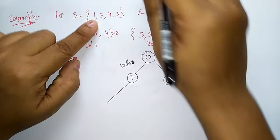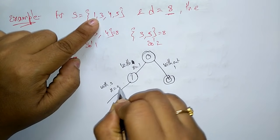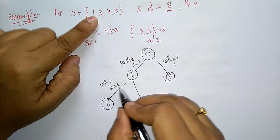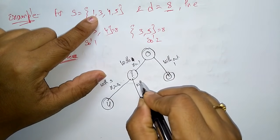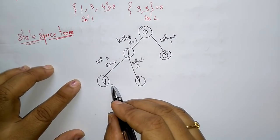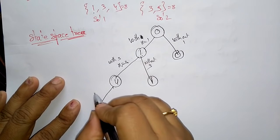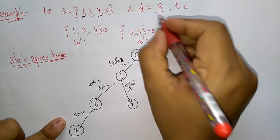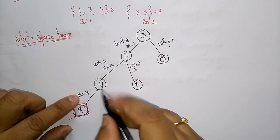The next element is 3. With 3: x = 1, x = 3, so 3 + 1 = 4. Without 3: just copy 1. Next element is 4. With 4: 4 + 4 = 8, which is the required sum — this is the first solution! Without 4: just copy the element.